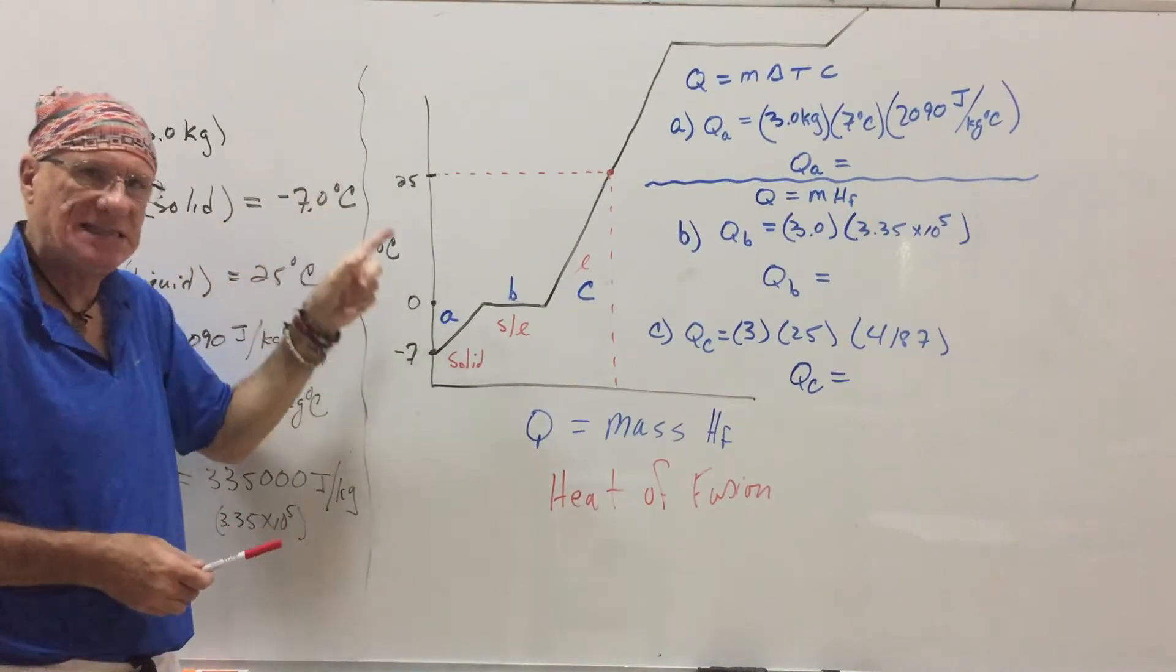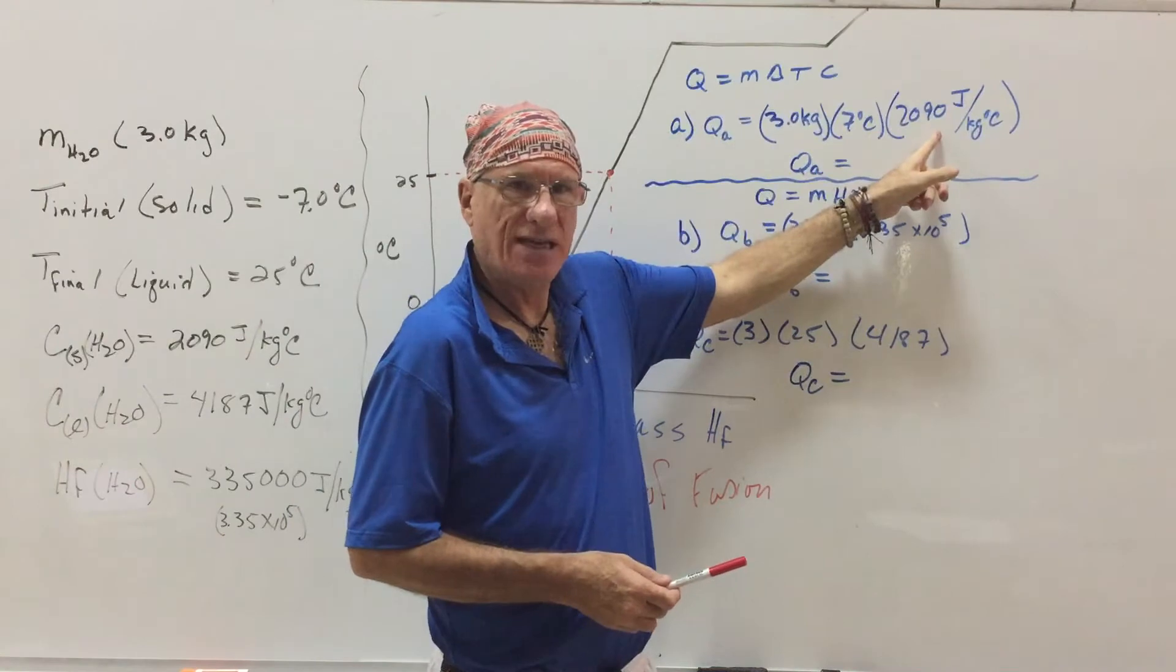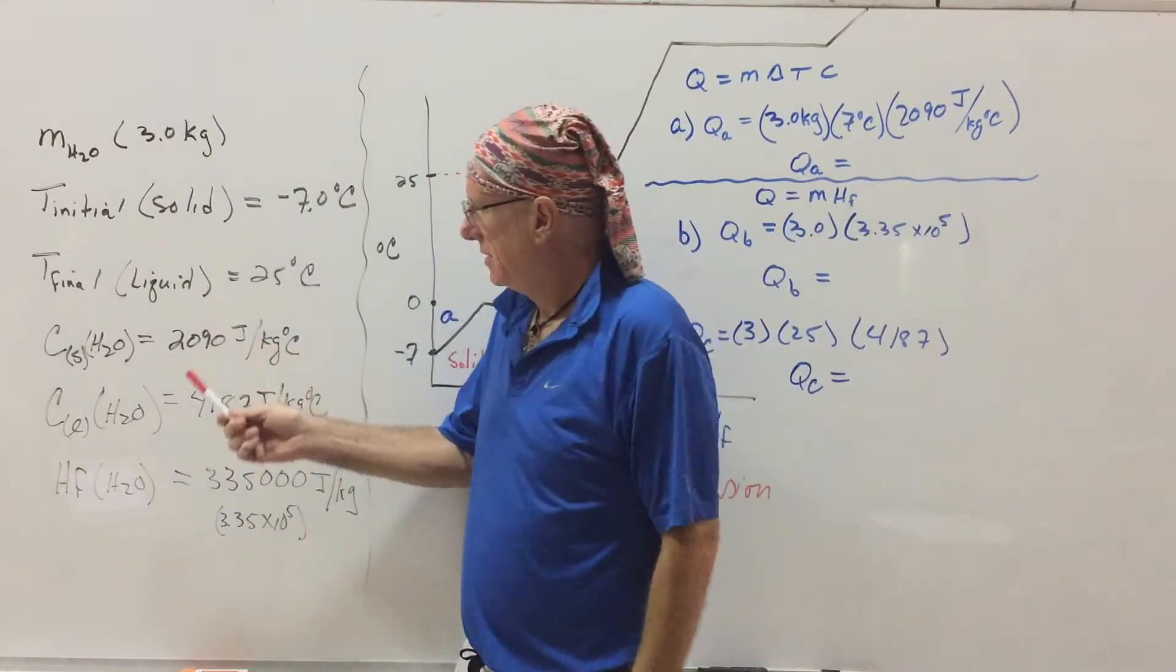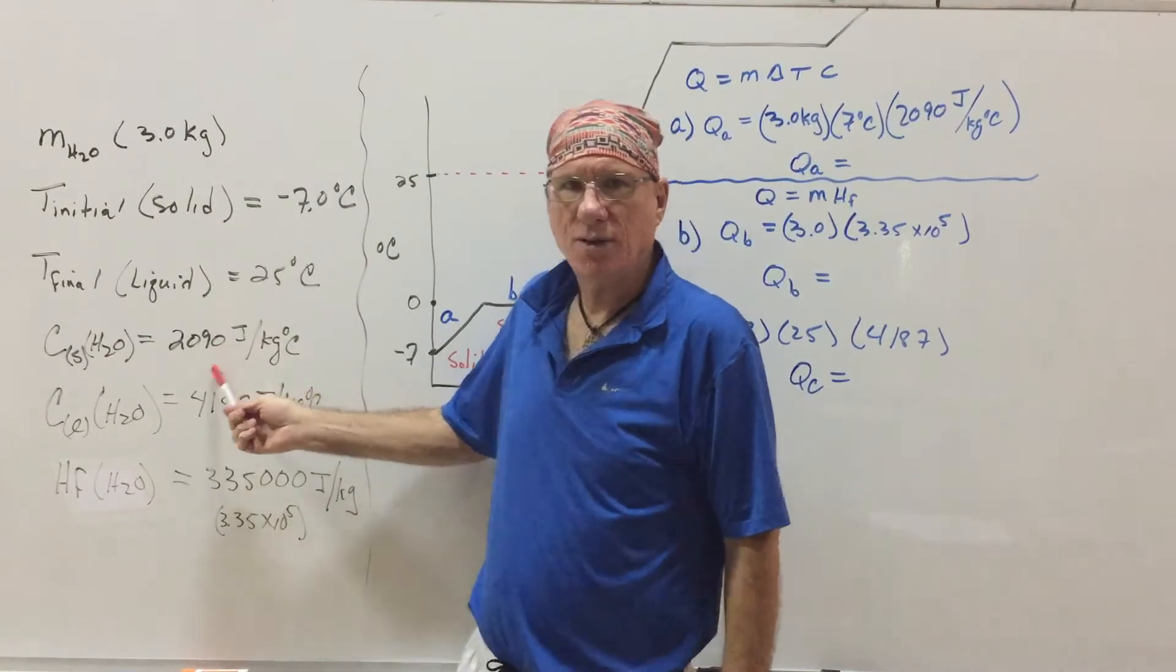And then that's the specific heat capacity of the ice, right here, 2090.